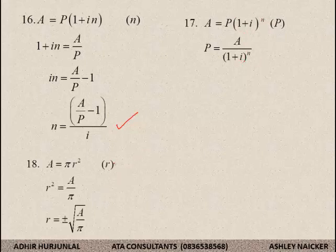Number 18. In order to solve for R. R squared is equal to A over pi divided. Then I get rid of the square. By square root in both sides. Now, guys, don't forget about this, please. You don't want to lose marks for nothing.